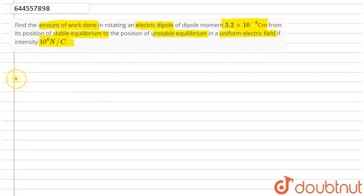We have all the data. Dipole moment is given as 3.2 × 10⁻⁸ C·m. Electric field intensity is given as 10⁴ N/C.